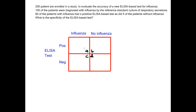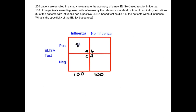There were 200 patients enrolled in the study and 100 were diagnosed with influenza, so 100 goes here. Because everything has to add up, 100 goes over here for people without influenza. There were 80 patients with influenza who had a positive ELISA-based test, so 80 goes here. And 5 patients without influenza had a positive ELISA-based test, so 5 goes here.